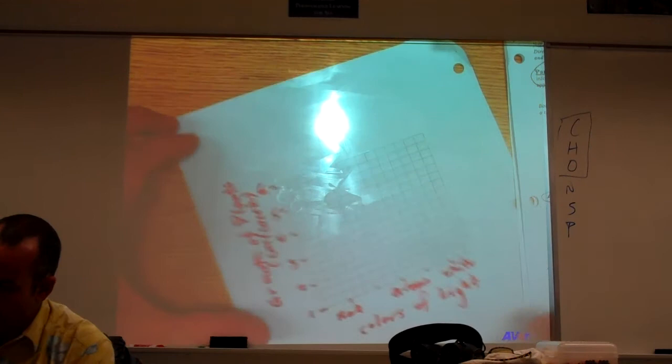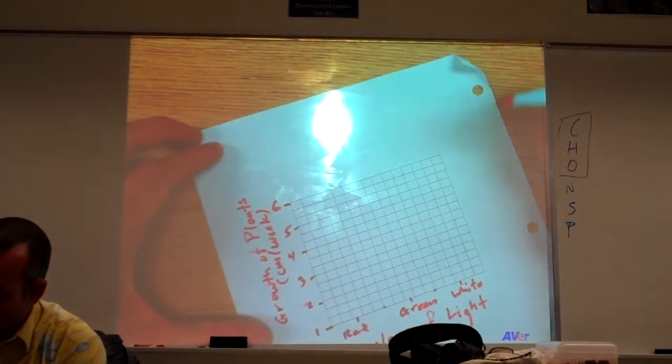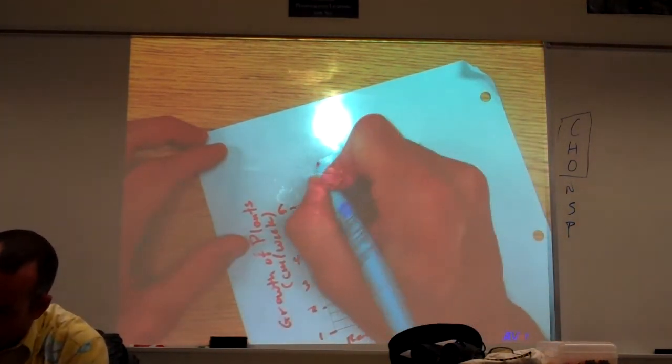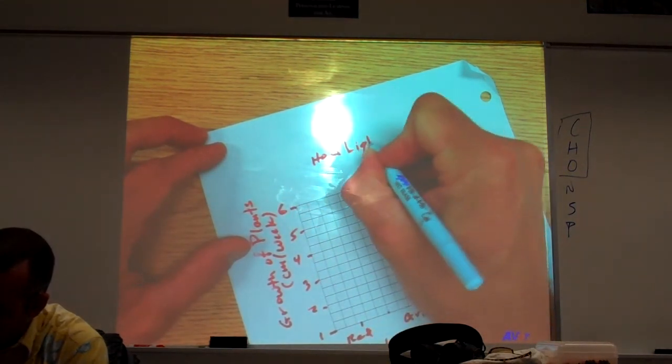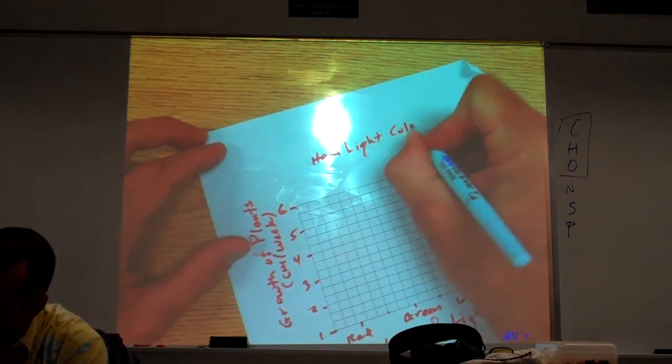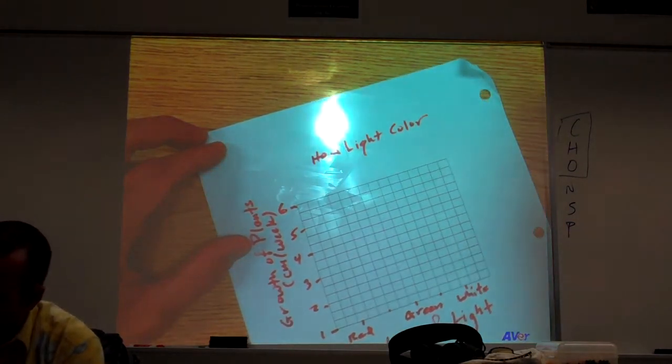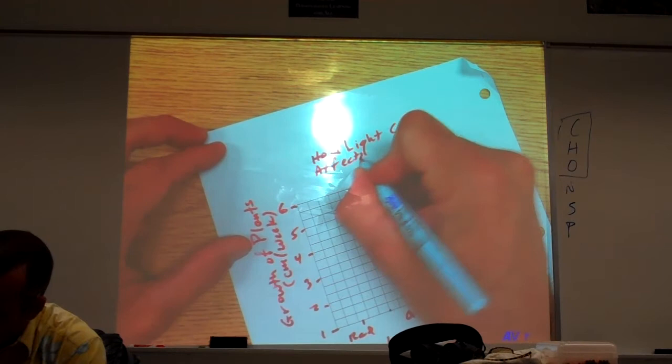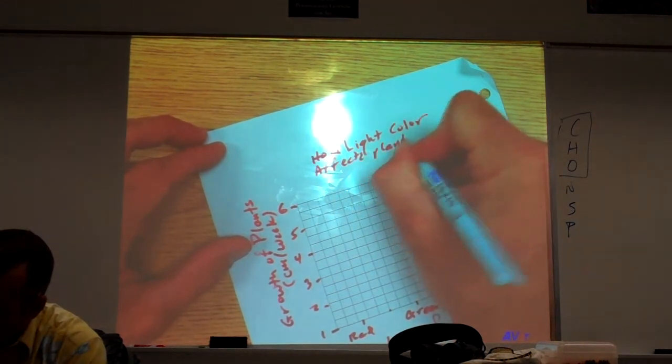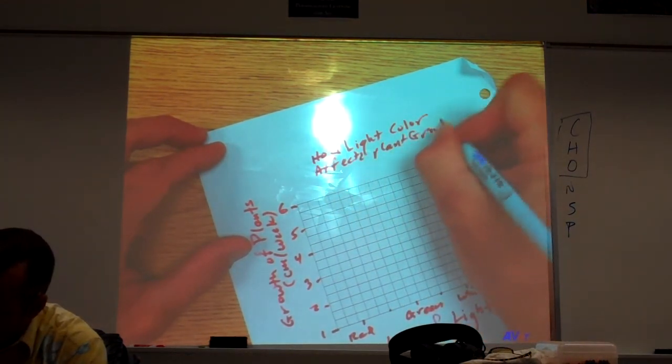All right, now look at the title. So we want to reflect the variables. So we're going to say, how light color, I'm just trying to shorten it as much as I can, how light color affects plant growth. Does that work?